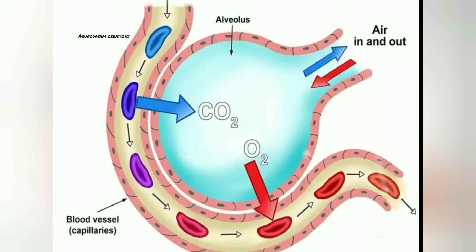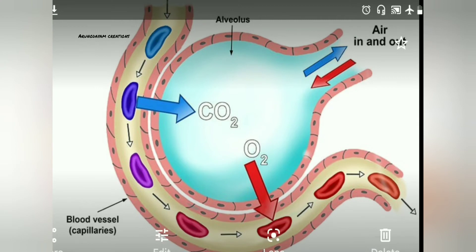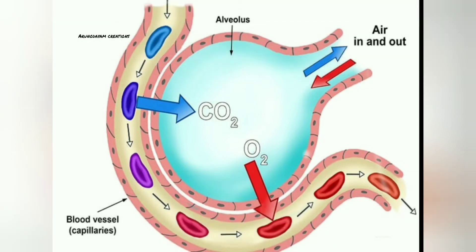During gaseous exchange between alveolus and capillaries, the alveolus already has air containing both carbon dioxide and oxygen gases. Likewise, blood capillaries also contain dark red blood with oxygen and carbon dioxide gases. So both the alveolus and blood capillaries have oxygen and carbon dioxide, but there is a concentration gradient — a concentration difference — present between them.